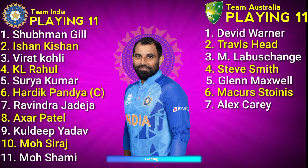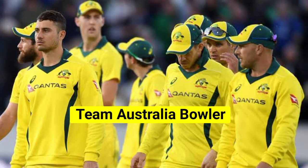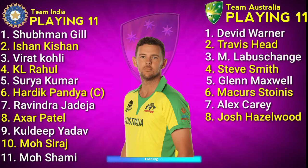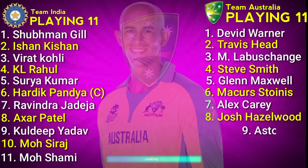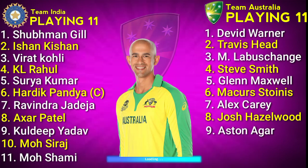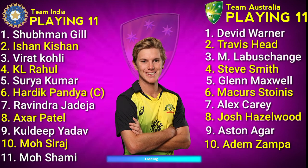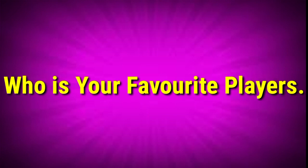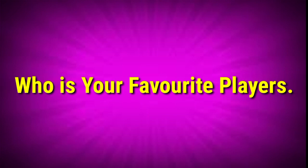No.11 Mohammed Shami, Right Hand Fast Bowler. Team Australia bowlers: No.8 Josh Hazlewood, Right Hand Fast Bowler. No.9 Ashton Agar, Left Arm Spinner. No.10 Adam Zampa, Right Hand Spinner. No.11 Mitchell Starc, Left Arm Fast Bowler.